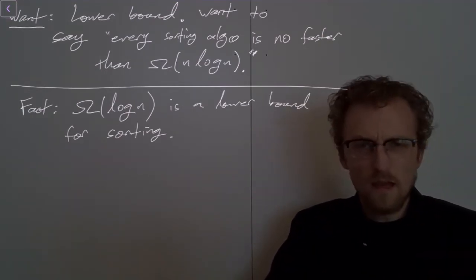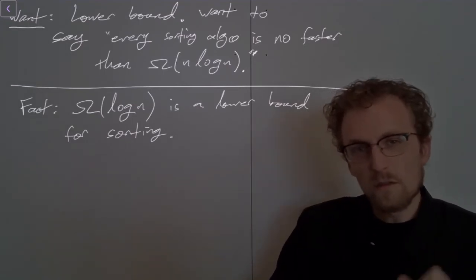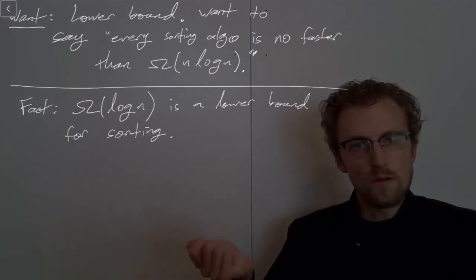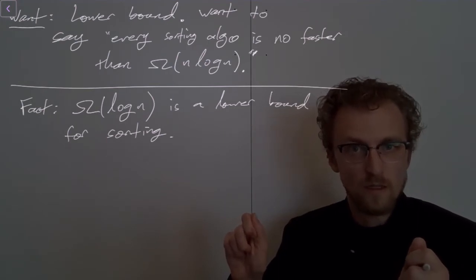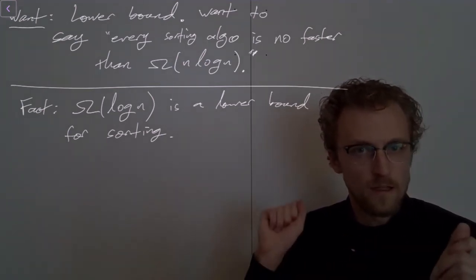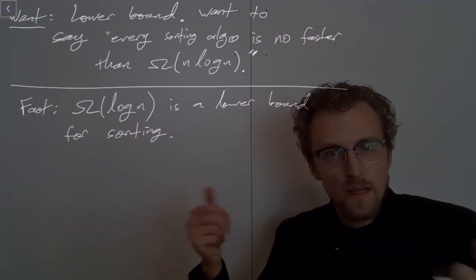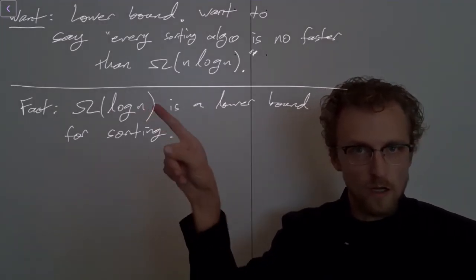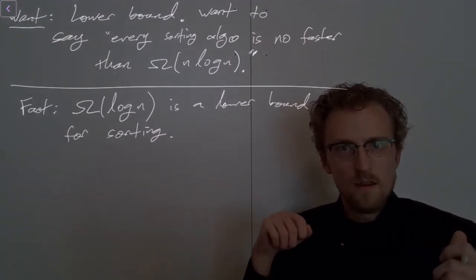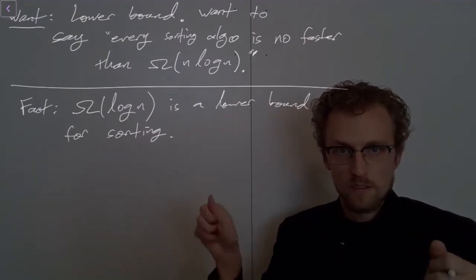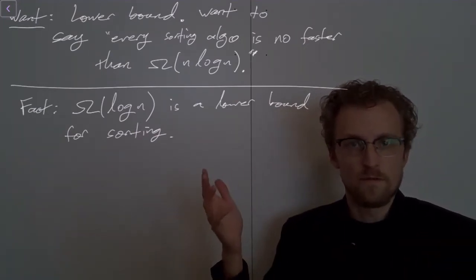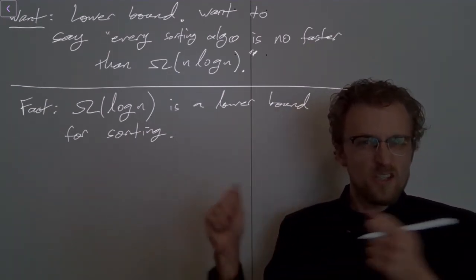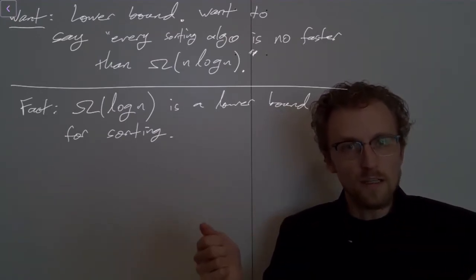Why would this have to be true? Log n represents an incredibly fast algorithm. If you have a logarithmic algorithm for an array problem like sorting, there's no way that your algorithm can be checking every element of the array. If you double the length of an array, a logarithmic algorithm only adds a constant factor to its runtime — for example, if the base is two, you add one to the runtime.